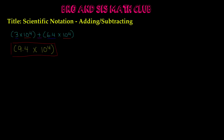Now let's do an example that doesn't involve the same exponents. Let's say we have 4.6 times 10 to the 3rd plus 4 times 10 to the 2nd. Our constants are 4.6 and 4, and our exponents are 10 to the 3rd and 10 to the 2nd. The base is always 10, but our exponents are different — we have 3 and 2.